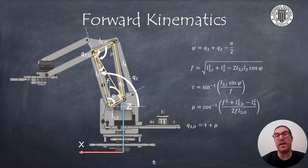Then, once the phi angle is known, we can compute the diagonal distance f using the cosine theorem.